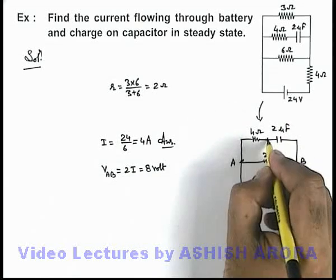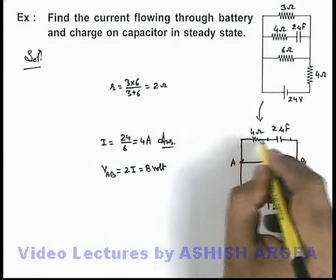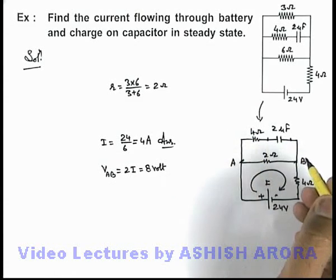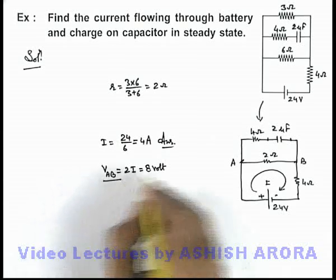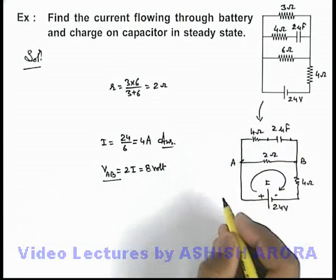The same will be the potential difference across 2 micro farad capacitor because no potential drop will be there in this 4 ohm resistance as no current is flowing in this branch. So this is the potential drop across this 2 ohm or this is the potential difference across 2 micro farad capacitor.